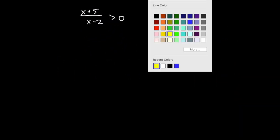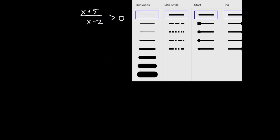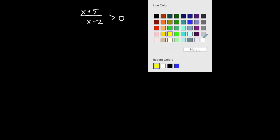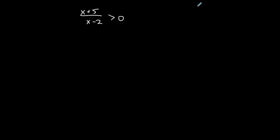This video is going to talk about rational inequalities. We talked about polynomial inequalities — this is a rational inequality. We have a rational expression and an inequality symbol, and the first step is always to make sure that zero is on the right-hand side of this inequality. So this one is already in proper form.